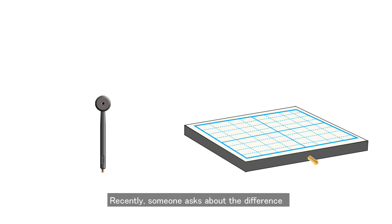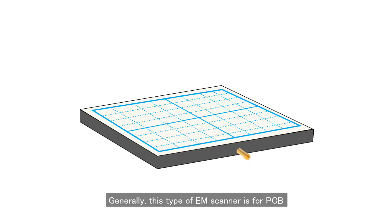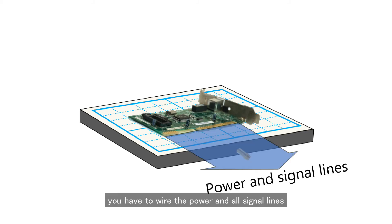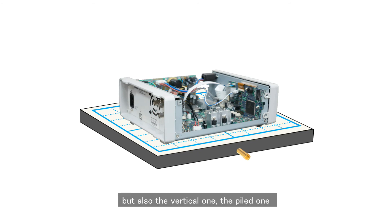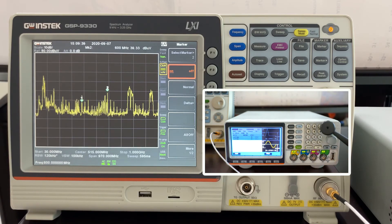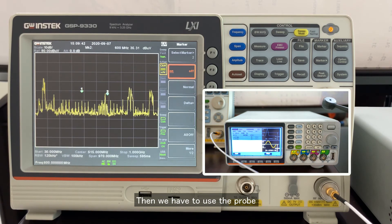Recently, someone asked about the difference between our probe and the EM scanner like this. Generally, this type of EM scanner is for PCB board. Before the testing, you have to wire the power and all signal lines, so that the EMI can be detected under a condition of full function operation. If the product has not only a horizontal PCB board, but also a vertical one, a piled one, or the one located in a finished product, then it's not that easy for EM scanner to find out the source. Just like our example for today, the device is wrapped with metal case. The EMI is leaked from the gaps, then we have to use the probe.